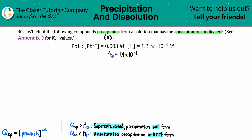A precipitate just means leftover solid. An easy way to think about this: for coffee or tea lovers who put sugar in their drink — a little sugar dissolves with no solid at the bottom, but if you add a lot of sugar, some won't dissolve. That undissolved sugar at the bottom is the precipitate.